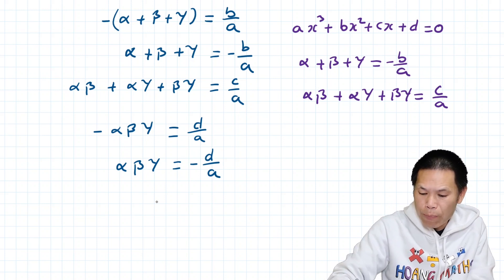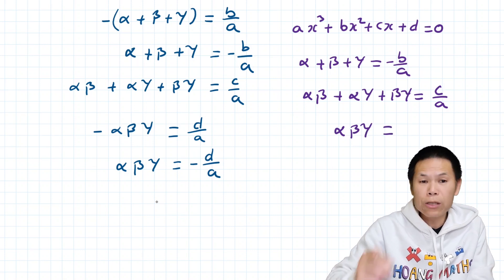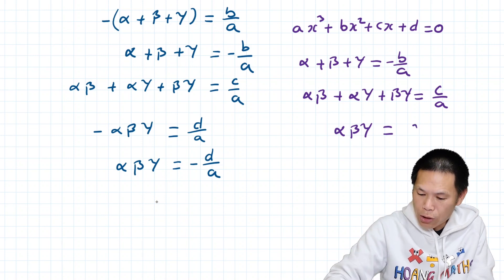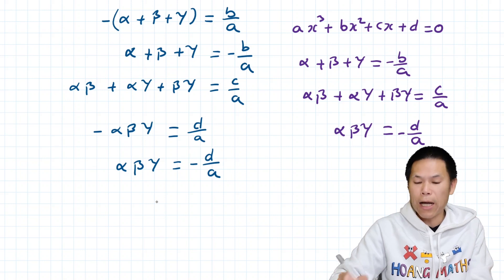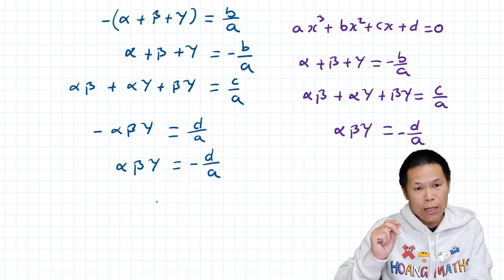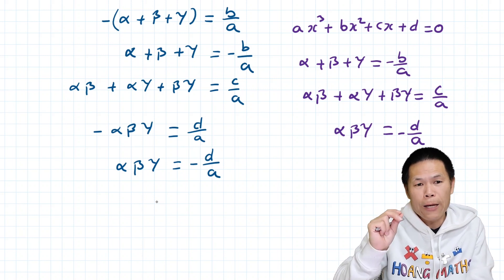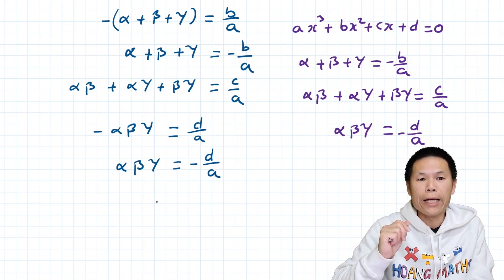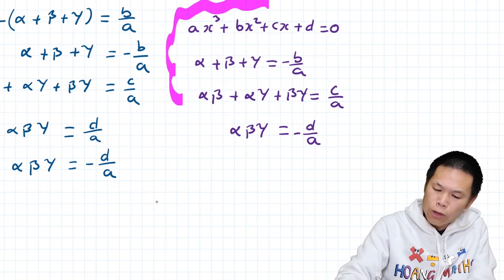So to summarize for a cubic equation ax³ + bx² + cx + d = 0: the sum of roots is −b/a, the sum of products of pairs is +c/a, and the product of all three roots is −d/a. The pattern alternates: negative, positive, negative — starting with b/a, then c/a, then d/a.